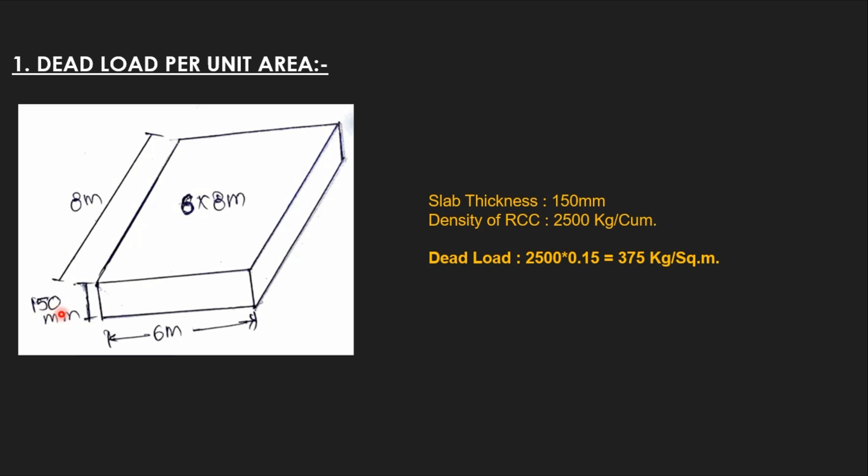You can find out the dead load per unit area. Since density of the RCC is known, dead load of slab can be found out by density multiplied by slab thickness. Therefore, multiply these two values: 2500 multiplied by 0.15, then you will get it as 375 kg per meter square. This dead load is per meter square.